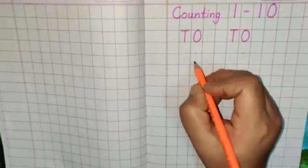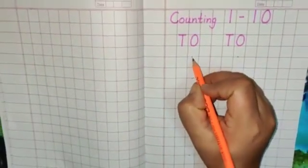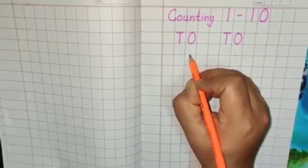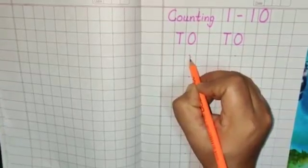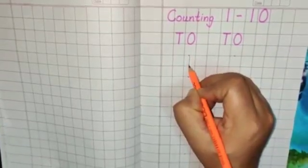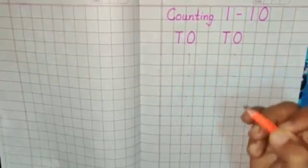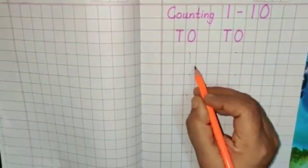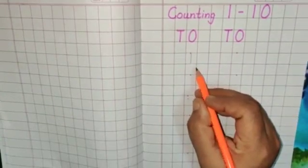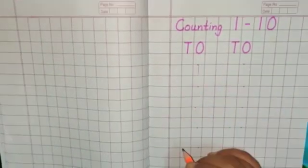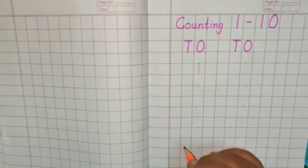Get your pencil ready on the dot and make a standing line like this. This is number 1. But don't make the standing line out of the box.